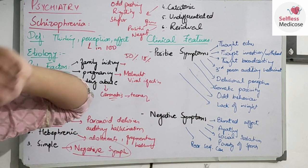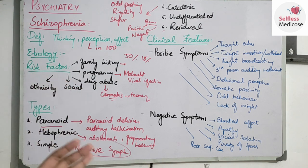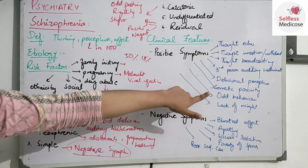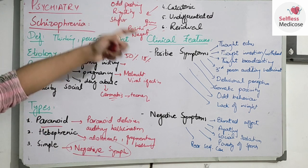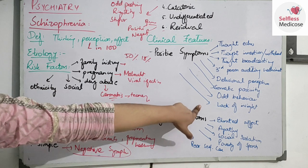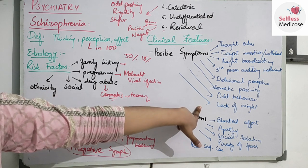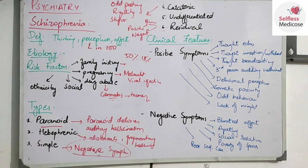Somatic passivity means that biological functions have become passive — sleep, appetite, and odd behaviors are affected. The patient shows odd posturing and rigidity. These are all positive symptoms. There is also a lack of insight — the patient does not know that anything is wrong with them.